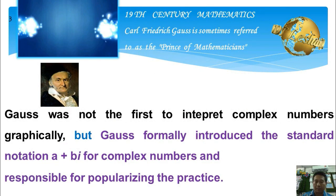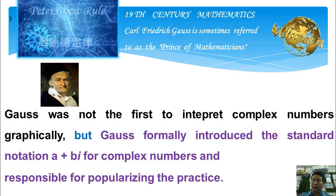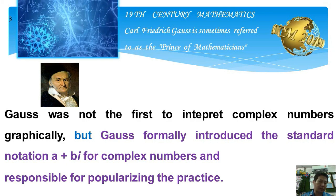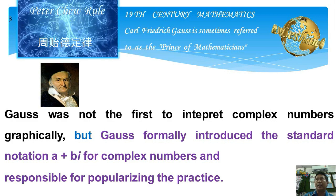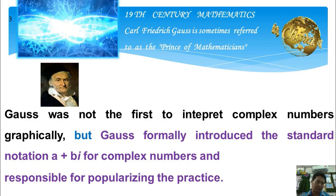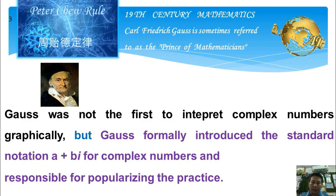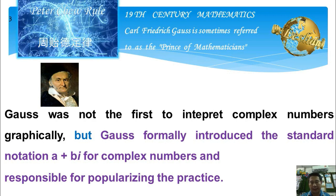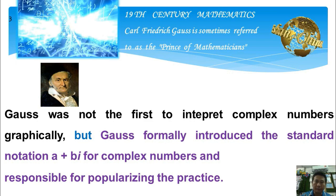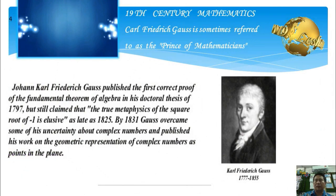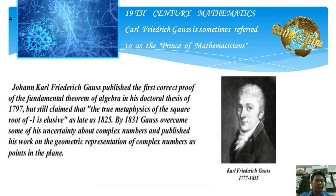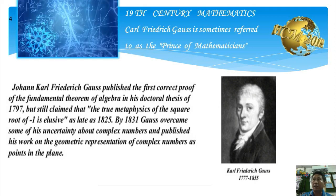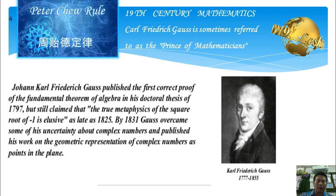Gauss, sometimes referred to as the Prince of Mathematicians, was not the first to interpret complex numbers graphically. Jean Robert Argand produced his Argand diagram in 1806, and Jean-Casper Büscher described a similar idea even before the turn of the 19th century. But Gauss formally introduced the standard notation A plus Bi for complex numbers and was responsible for popularizing the plane. I think Gauss first introduced A plus Bi and explained the relationship between imaginary and real numbers.